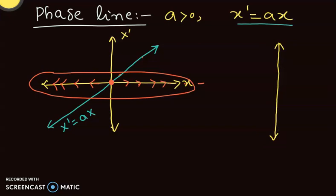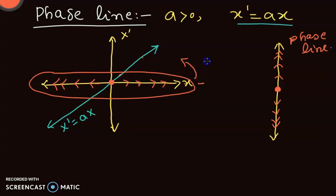We have seen that 0 is our equilibrium point. When x is positive the particle is moving to the right, so on the phase line this is moving up; when x is negative it is moving down. We have tilted this line vertically — so this is my phase line. Using this phase line I can plot the slope field, or direction field, and with the help of that I can plot my solution trajectories.